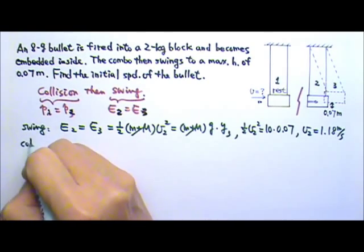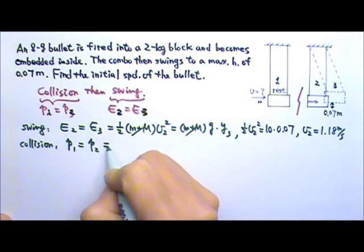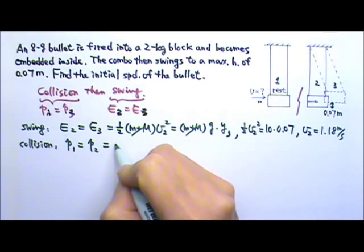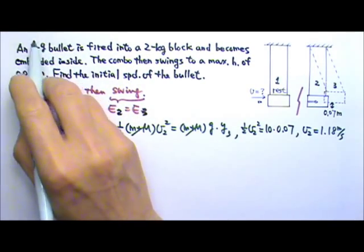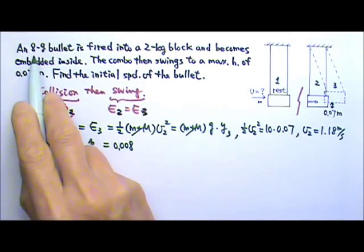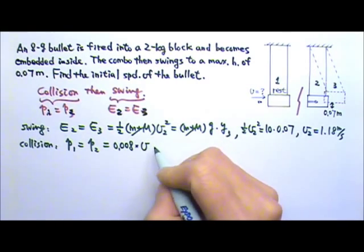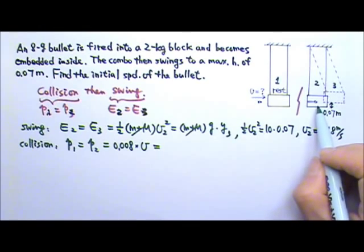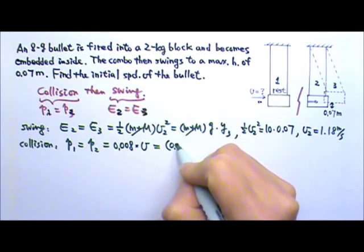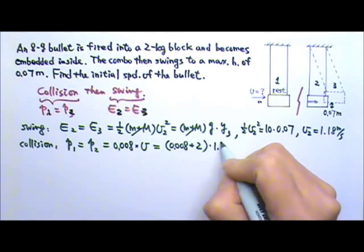Now let's look at the collision part. For the collision, we can use the conservation of momentum. Before the collision, the block has no momentum. The bullet is the only one with the momentum. So we have M times V for the bullet. The bullet is 8 grams, we have to change it to kilograms, so that would be 0.008 kilograms times the velocity we're looking for. And that's it for the initial momentum. At the end of the collision, the bullet is inside the block, which means the bullet and the block move together with that 1.18 velocity.